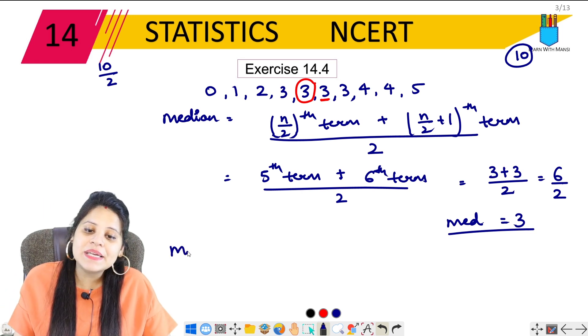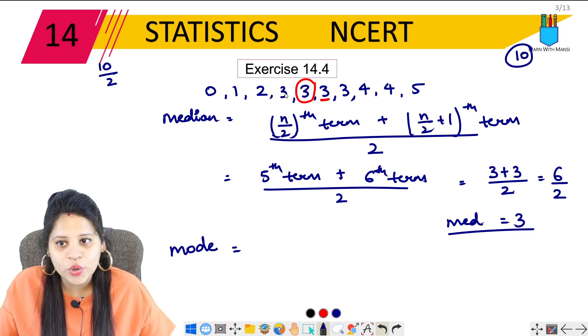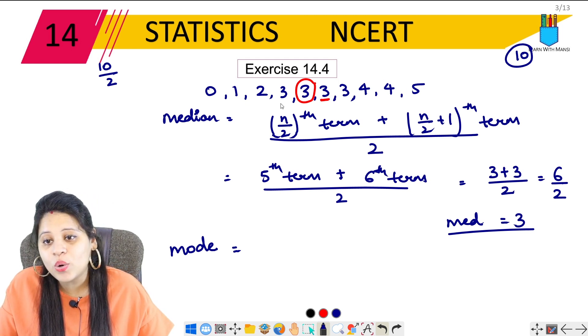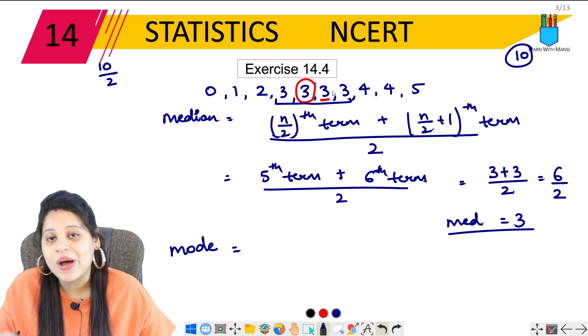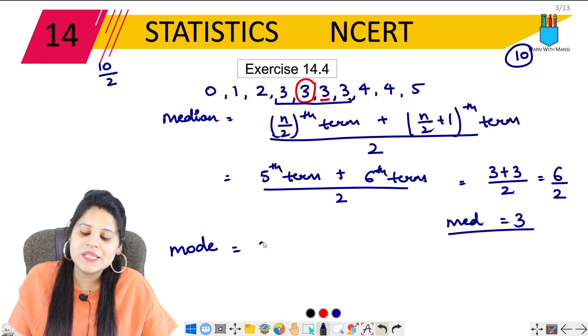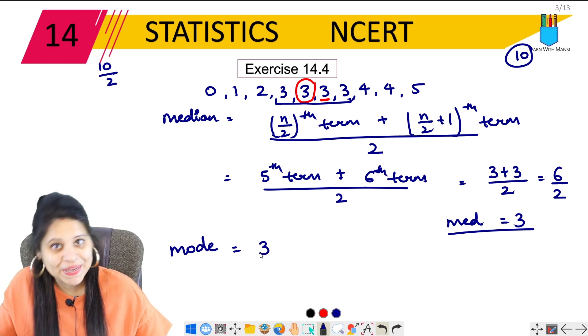Last, we have to find the mode of this data. So again, we have to arrange this in the mode. What is the most repeat? 3 is 4 times repeat. So in the highest frequency mode, that means the mode is 3.